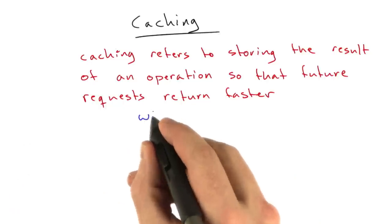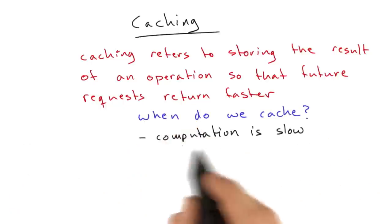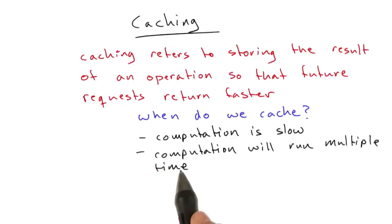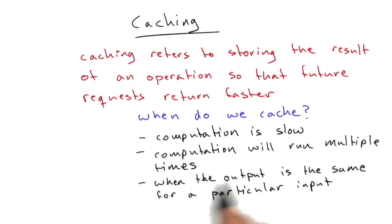So, when do we cache? We cache things when the underlying computation is slow, when the underlying computation will run multiple times, when the output of said computation is the same for a particular input so that we know we don't have to recompute it every time because it's going to be the same every time, the output of this computation.